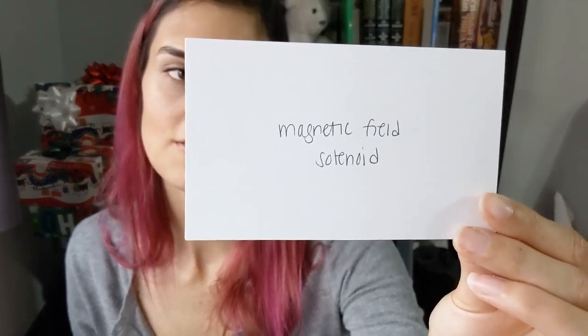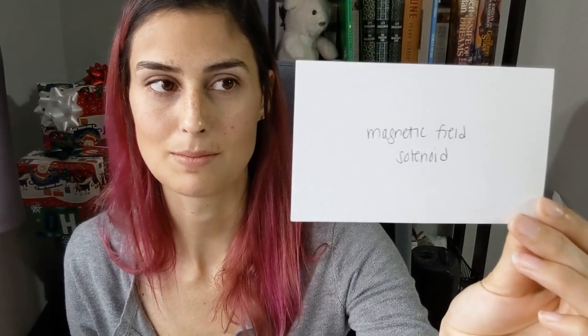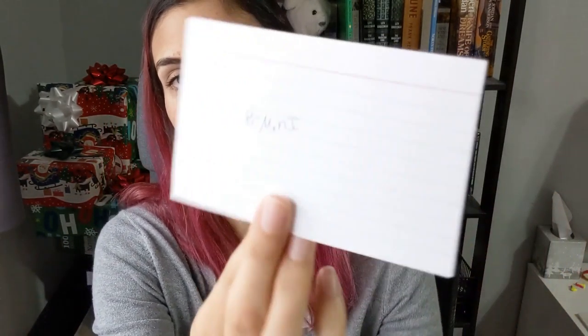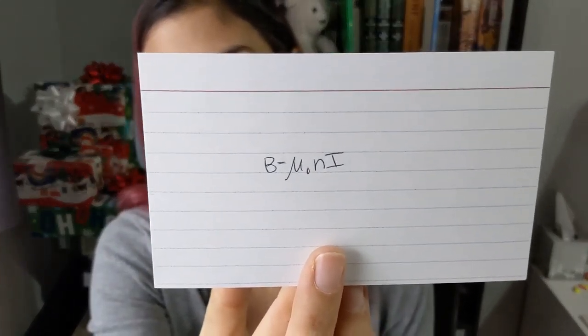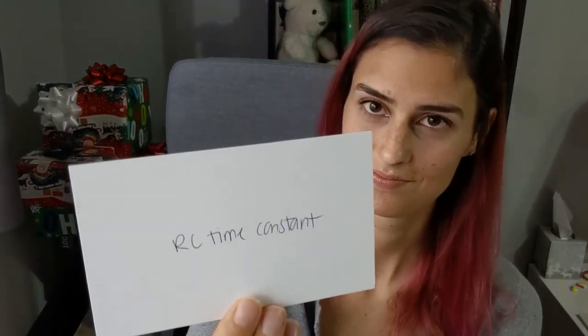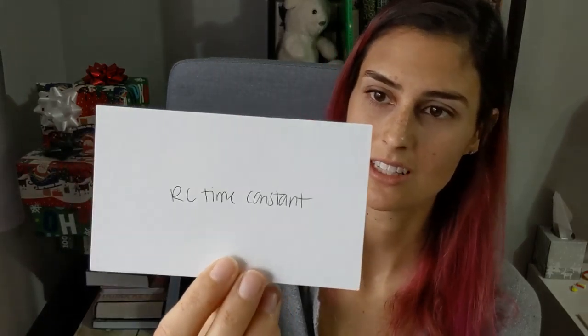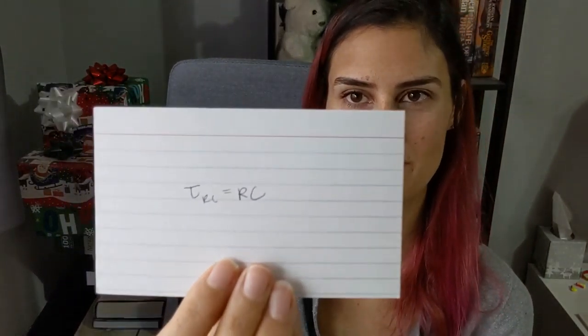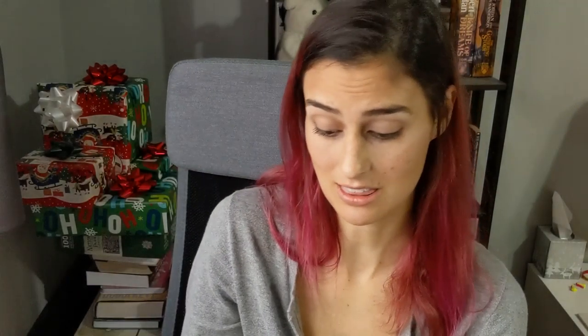The magnetic field of a solenoid: B equals mu naught times n times I. The RC time constant: tau RC equals R times C. A lot of these equations are pretty simple but I tended to get them confused, which is why I made all these note cards to keep them straight.